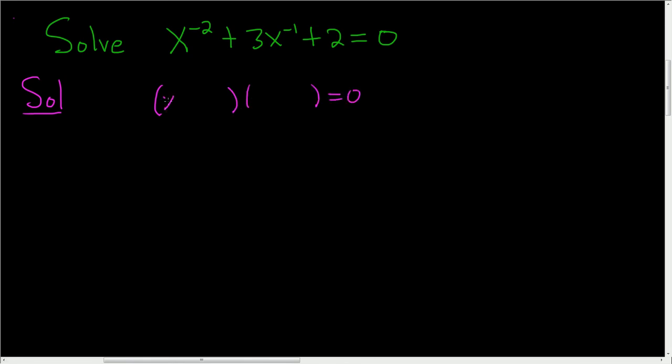And here we should have an x to the negative 1, and here we should have another x to the negative 1. The reason is if you multiply these, you just get x to the negative 1 times x to the negative 1, and you just add the exponents. So negative 1 plus negative 1 is negative 2. So everything there looks okay.